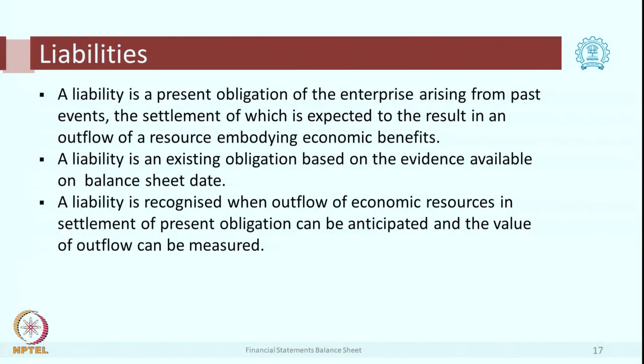Now let us go to the next part, that is liability. What is meant by a liability? It is a present obligation of the enterprise that arises from past events. In the past, suppose we have purchased raw material from somebody. If you pay in cash, you get raw material and pay cash, and there is no liability. But if you purchase raw material and you are yet to pay — say you are going to pay at the end of one month — then it will be shown as a liability in your books.